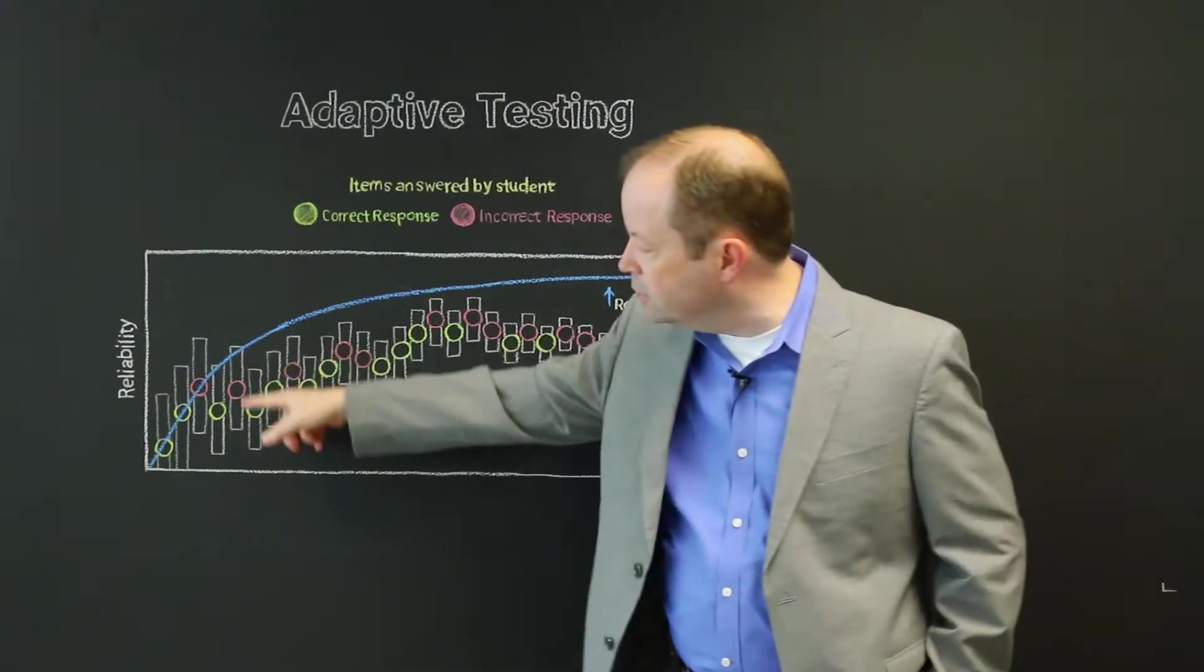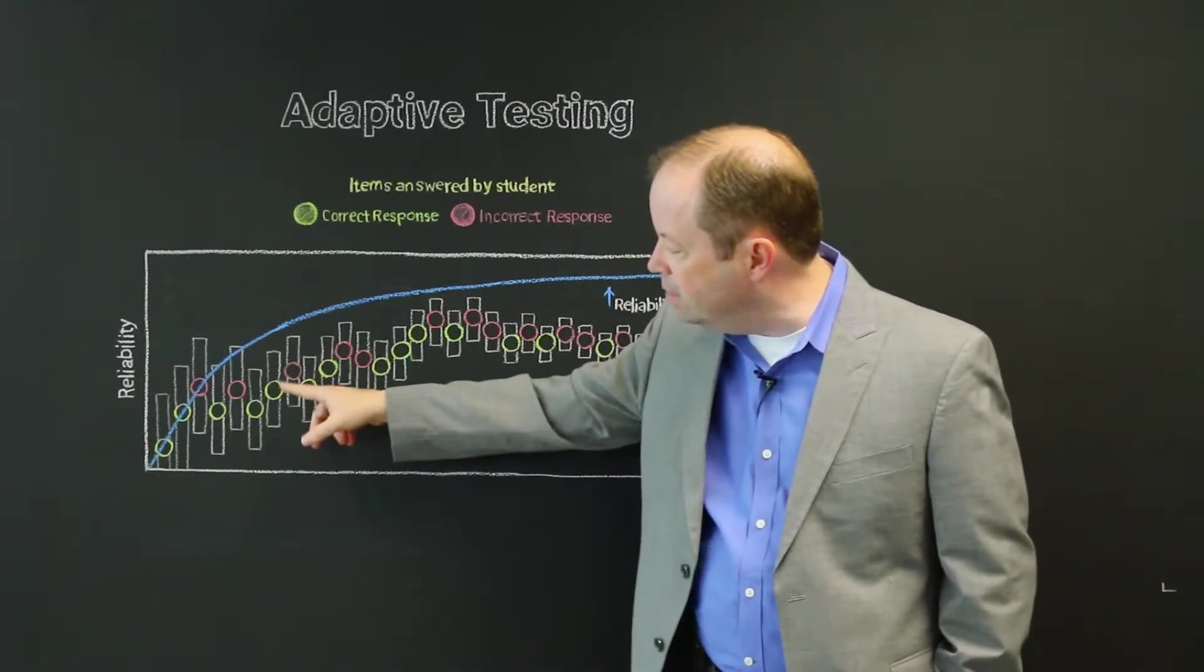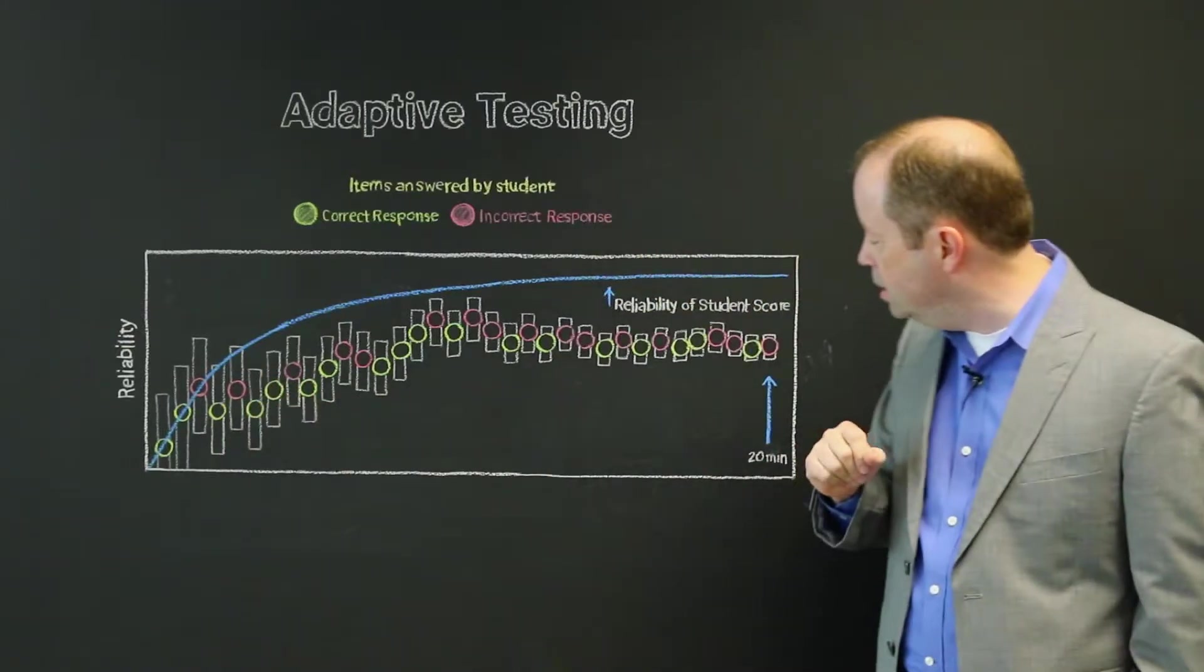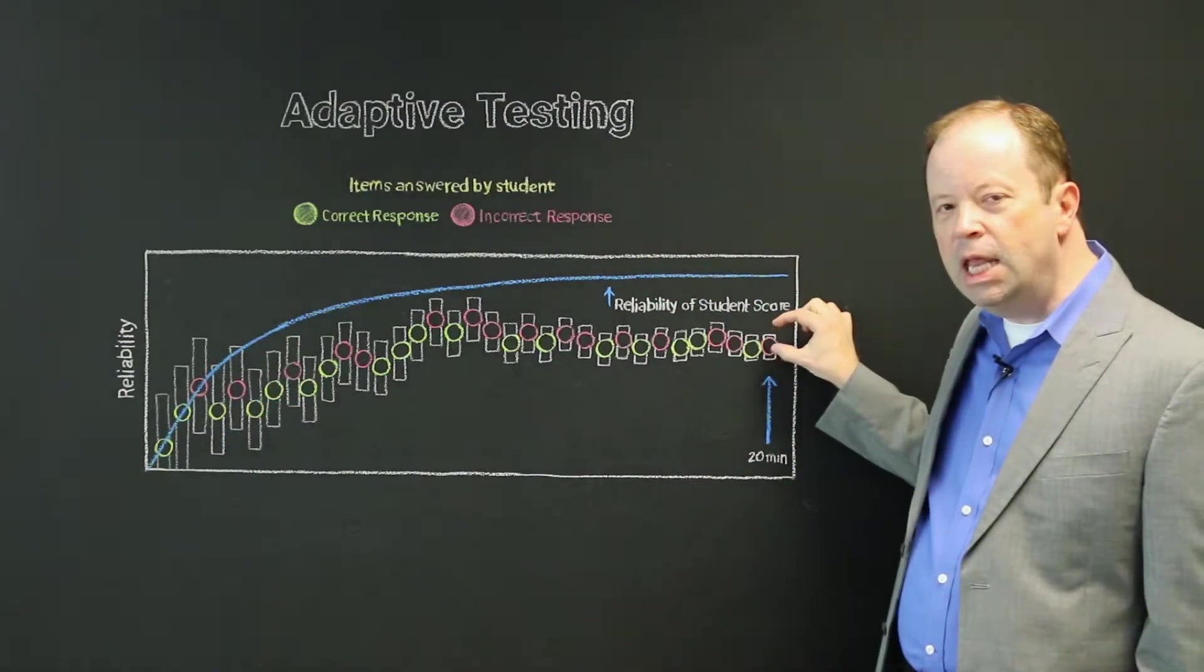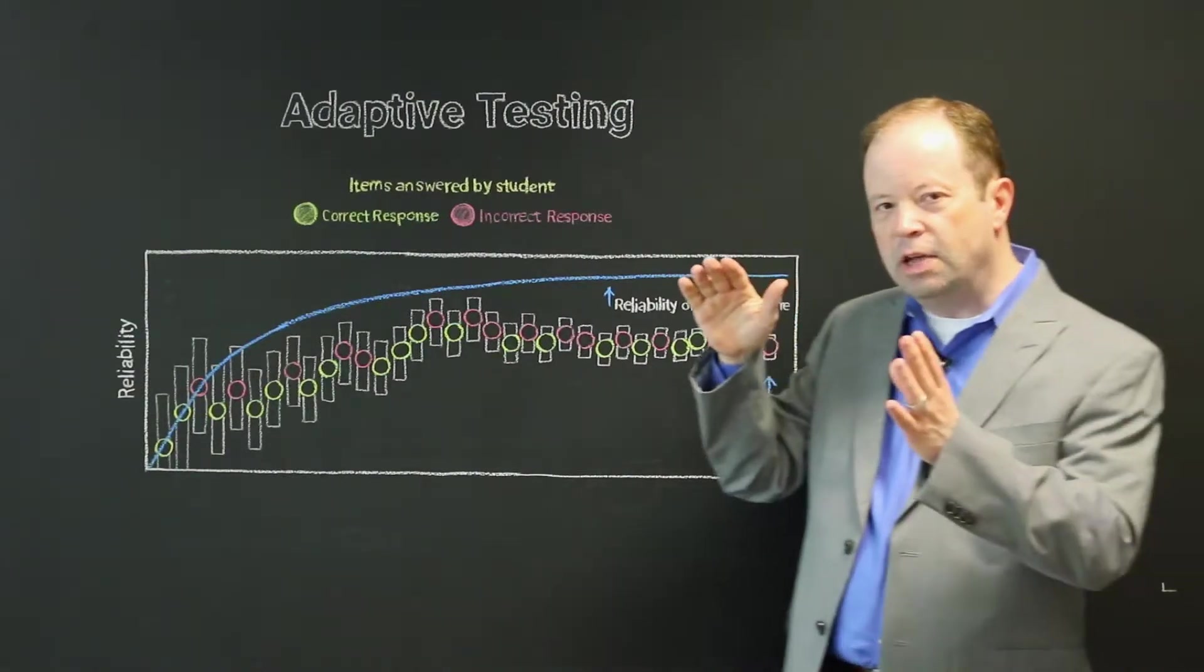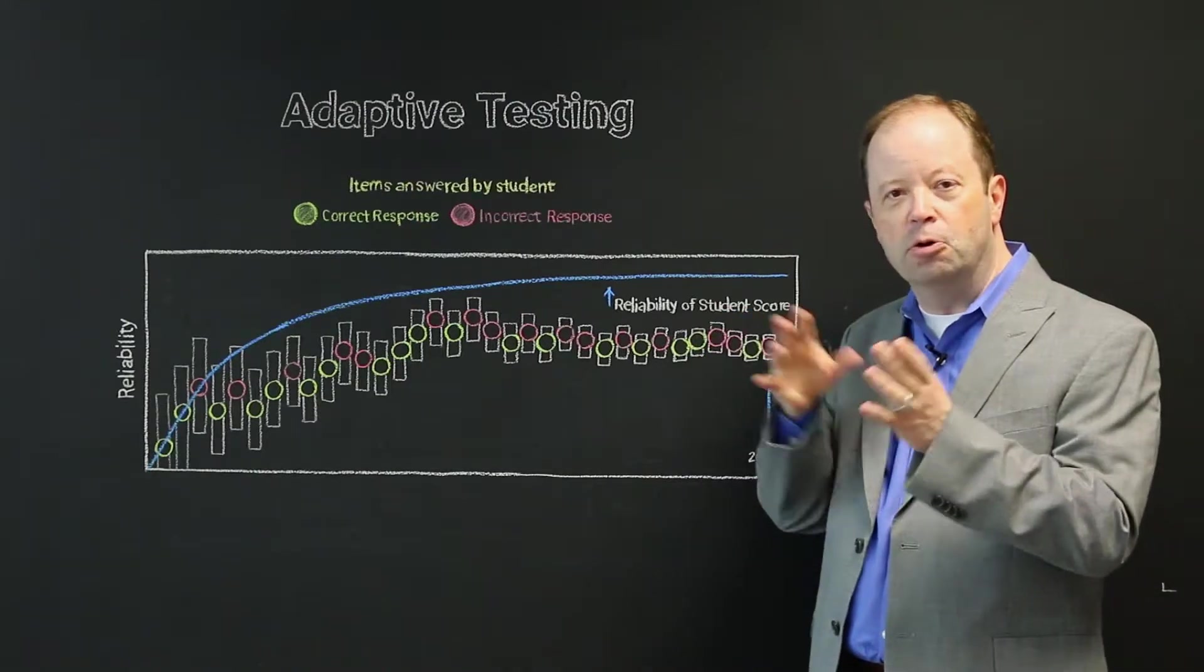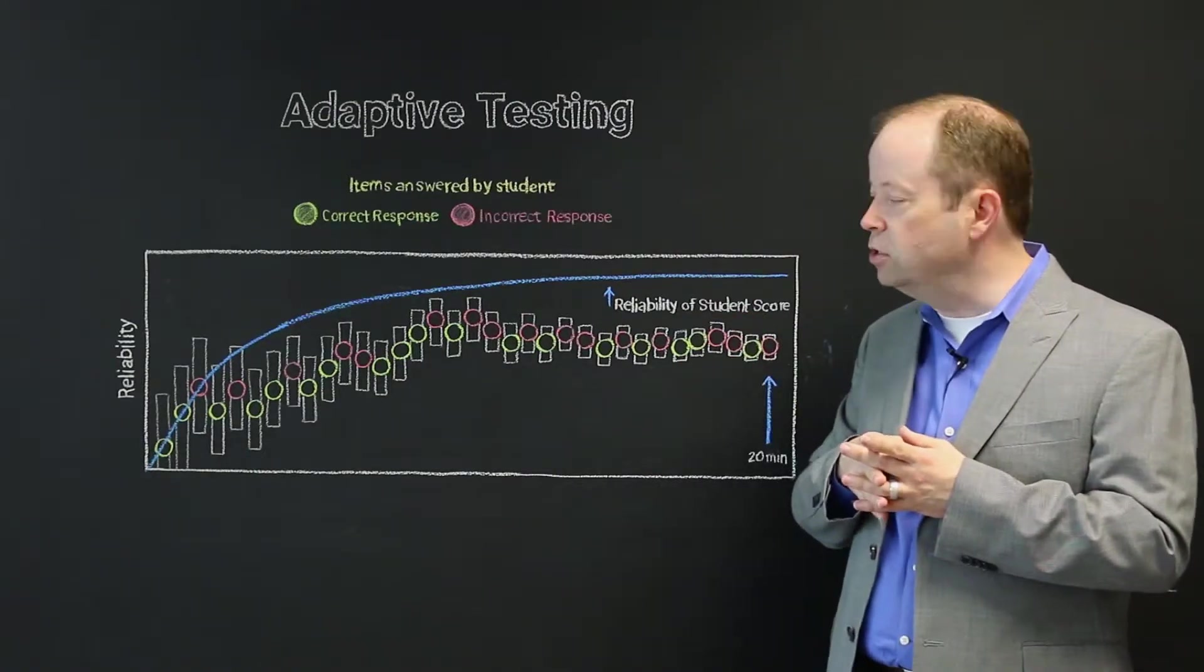First of all, notice the tails that appear around any of these items, and notice that they're fairly lengthy as the test begins, but by the time we get to the end of the test, those tails have gotten much, much smaller. What that represents is the margin of error around the estimated score for students.